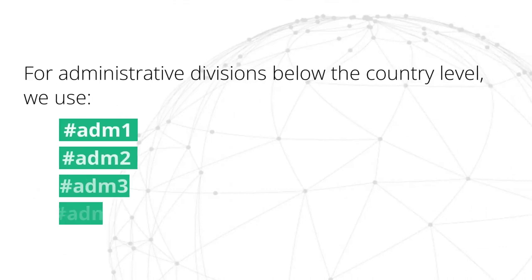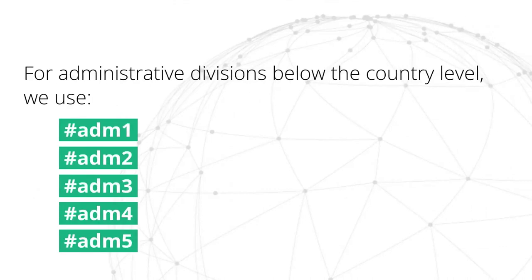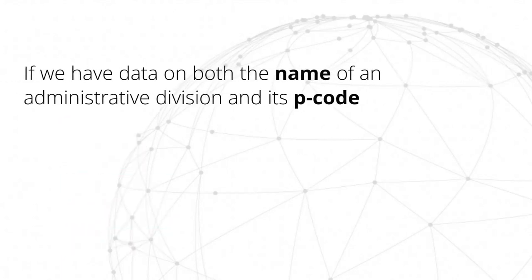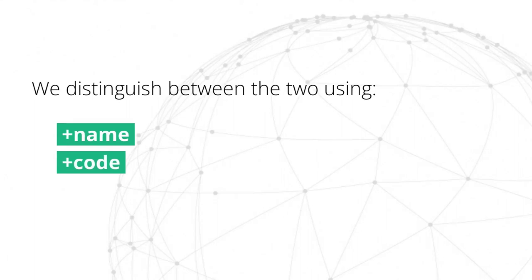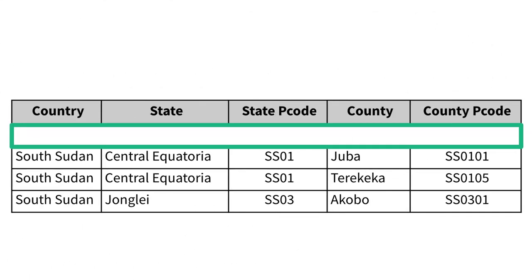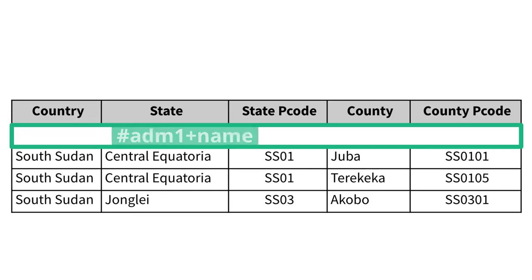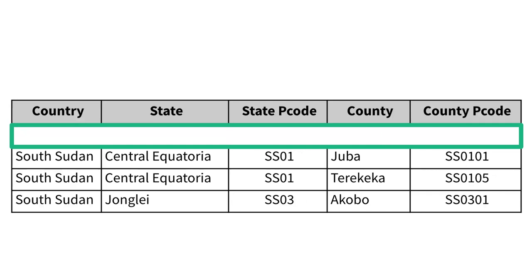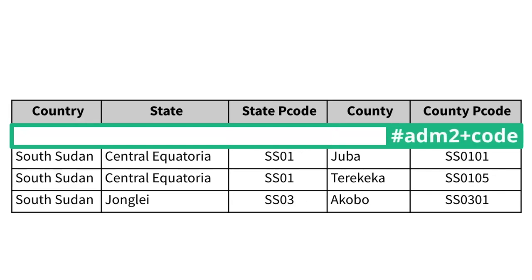For administrative divisions below the country level, we use the hashtags ADM1, ADM2, ADM3, and so on. If we have data for the name of the administrative division and its P code — a geocoding system commonly used in humanitarian emergencies — we distinguish between the two using the name and code attributes. In our example, we would use hashtag ADM1 plus name for the name of the state and hashtag ADM1 plus code for the state's P code. The same goes for the county's name and P code: hashtag ADM2 plus name and hashtag ADM2 plus code.